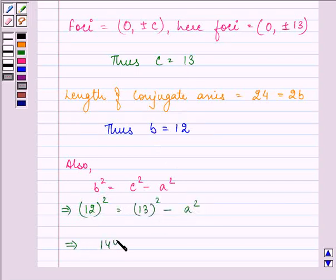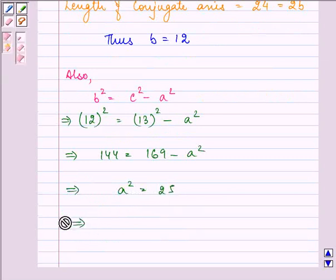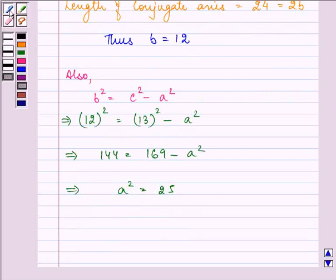That further implies 144 = 169 - a². That is a² = 25. Now we know the value of a as well as b.